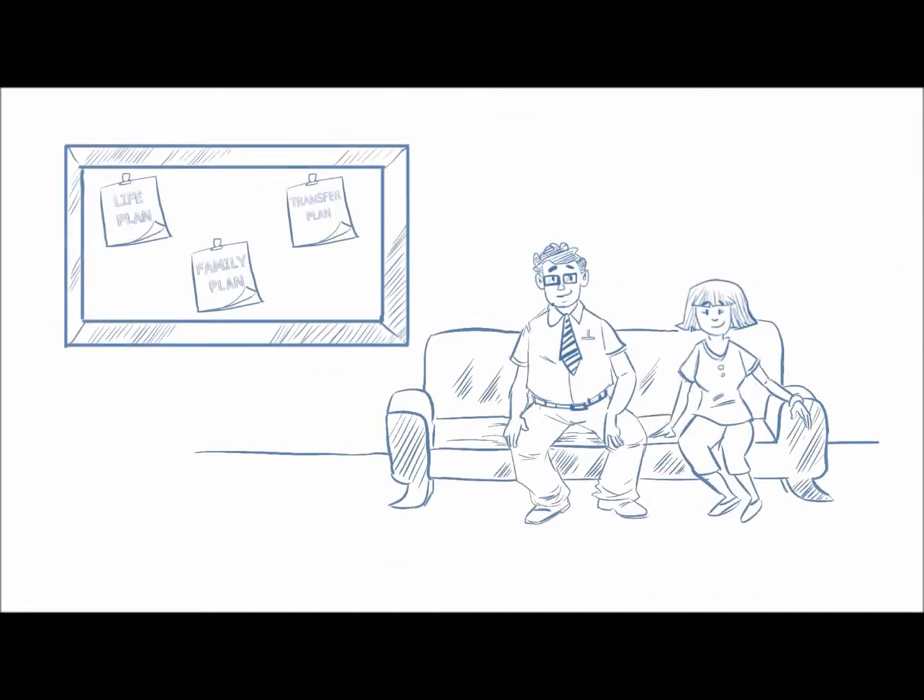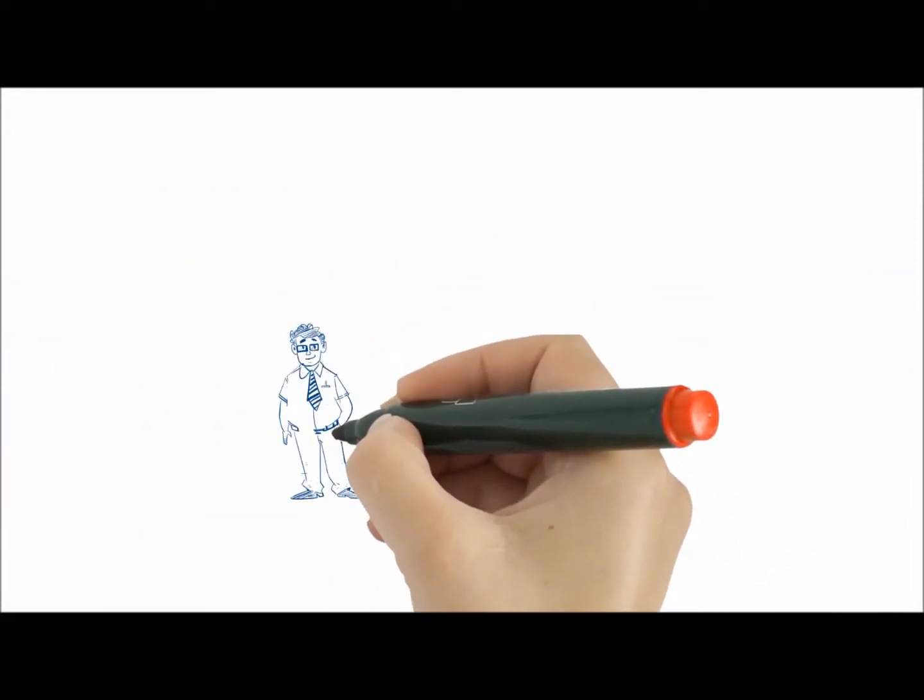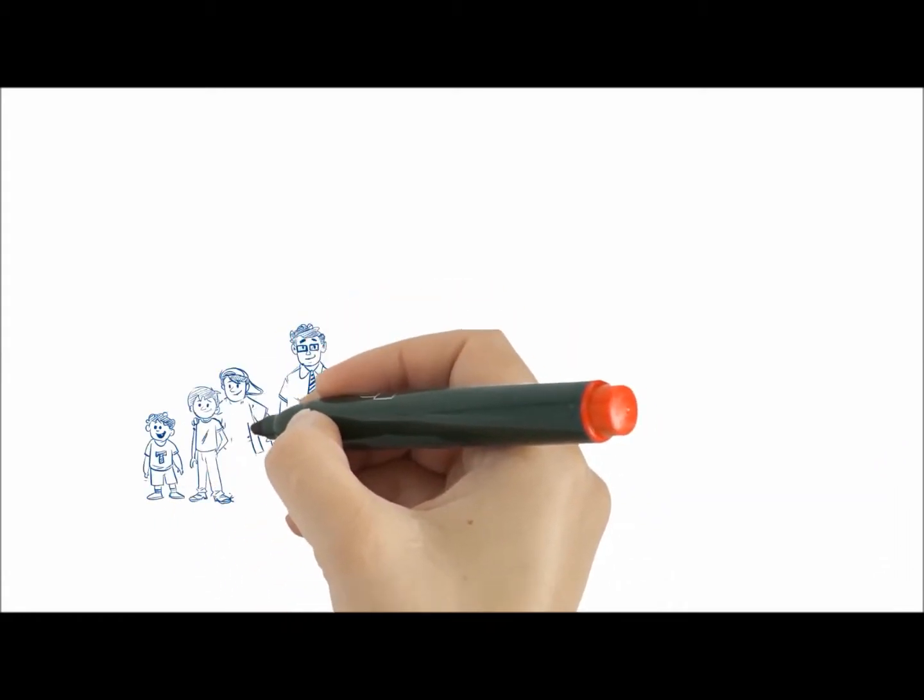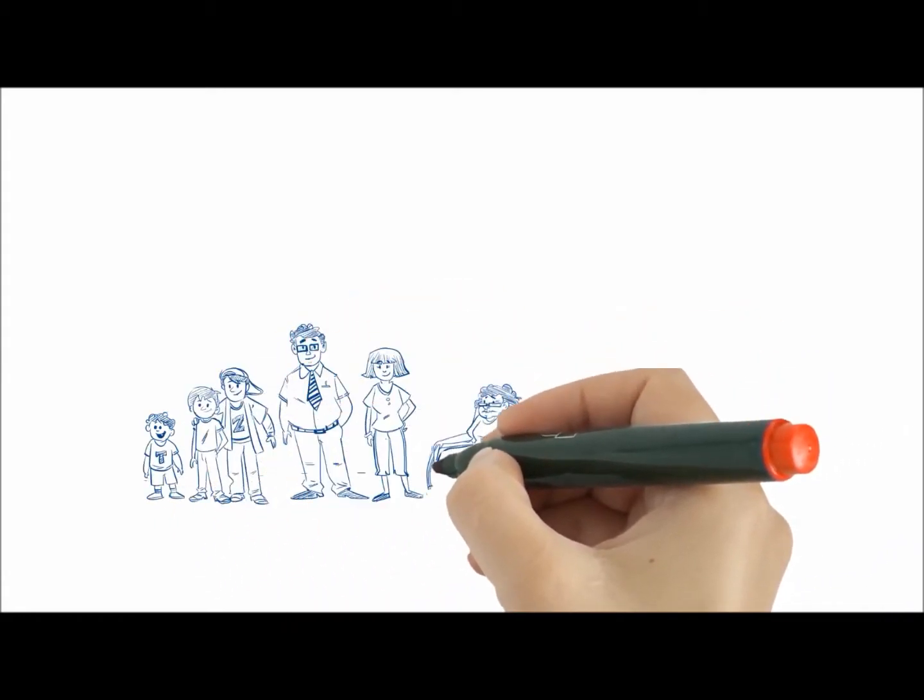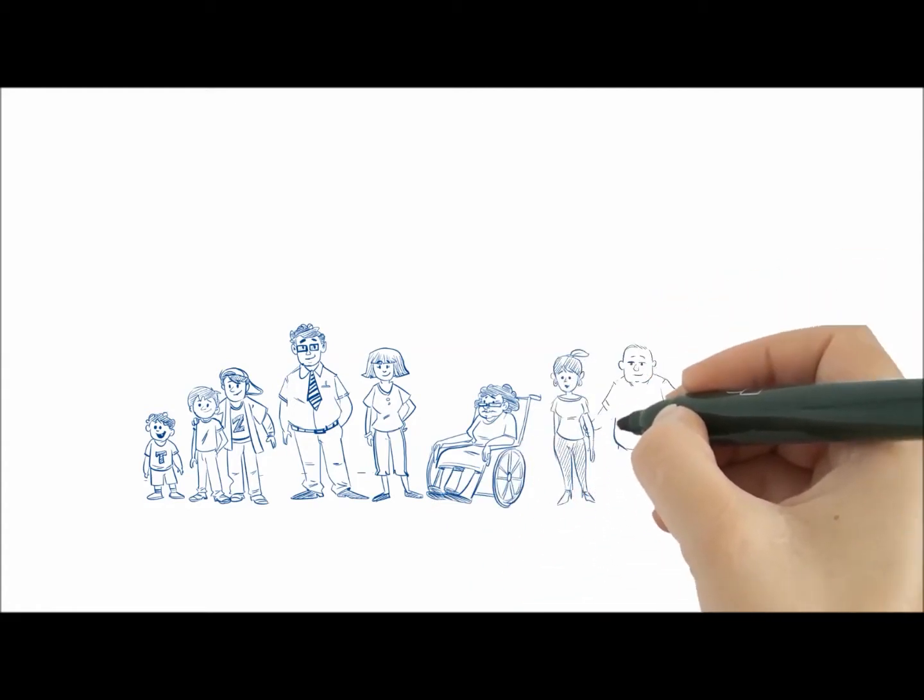It should also include a family plan, leaving everyone on the same page, avoiding family conflicts, and leaving values, not just assets, and most importantly, leaving someone as the guardian for the kids and grandma in their absence.